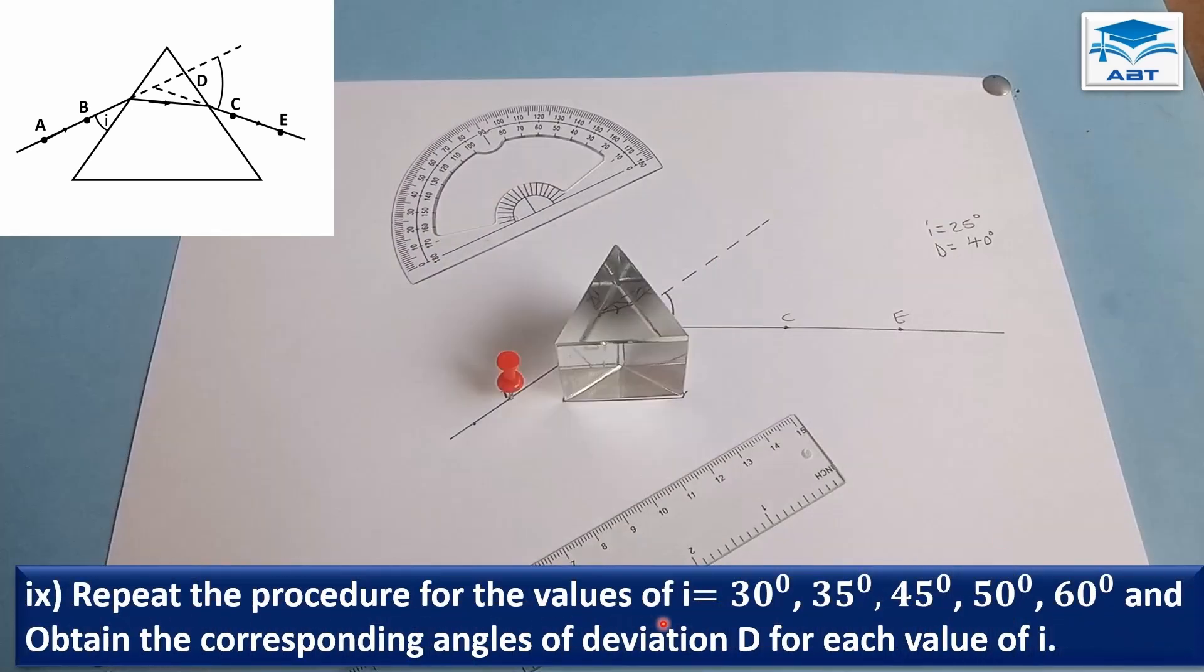Repeat the procedure for the values of i equals 30 degrees, 35 degrees, 45 degrees, 50 degrees, and 60 degrees, and obtain the corresponding angles of deviation D for each value of i. So we are going to repeat the procedure with an angle of 30 degrees and measure the deviation. Repeat the procedure again with an angle i equals 35 degrees. On another diagram, record the deviation. Repeat it for 45 degrees, 50 degrees, and 60 degrees, and tabulate the results.